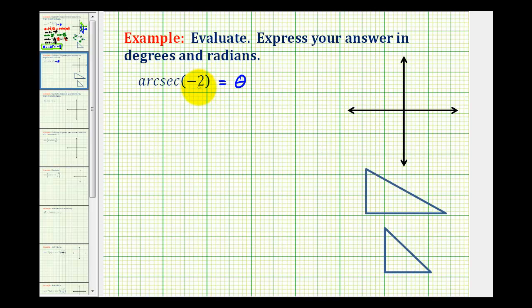Or if we want, negative two over one. But there's an infinite number of angles that have a secant function value of negative two, and that's why it's important that we know the output or range for the arc secant function.